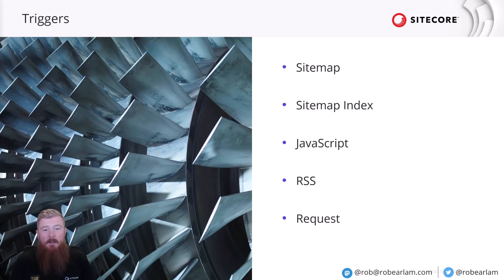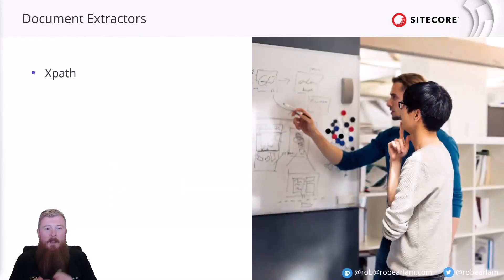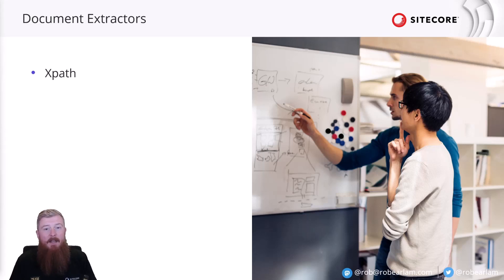Once you have your triggers configured, you then need to set up your document extractors to take the data returned and match it to your attribute model. Just like with triggers, the document extractors you can choose depend on which connector you've selected. The first is the XPath extractor, used with web crawlers, which allows you to map attributes to XPath queries made against the target document's DOM. Next is the CSS extractor, another one only available for web crawlers — instead of XPath, you use a CSS selector to pull out elements from the DOM.